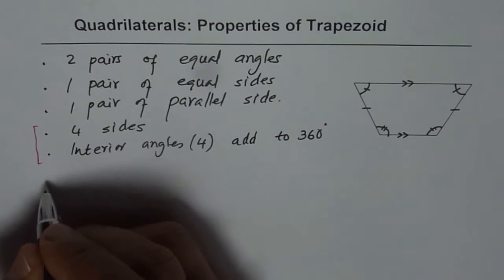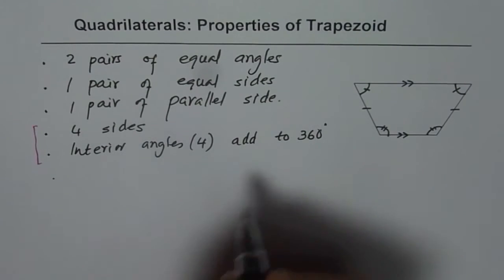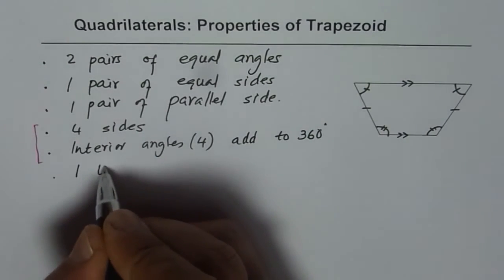Now let's talk about the lines of symmetry. How many lines of symmetry does it have? Figure it out and draw one. It has one line of symmetry.